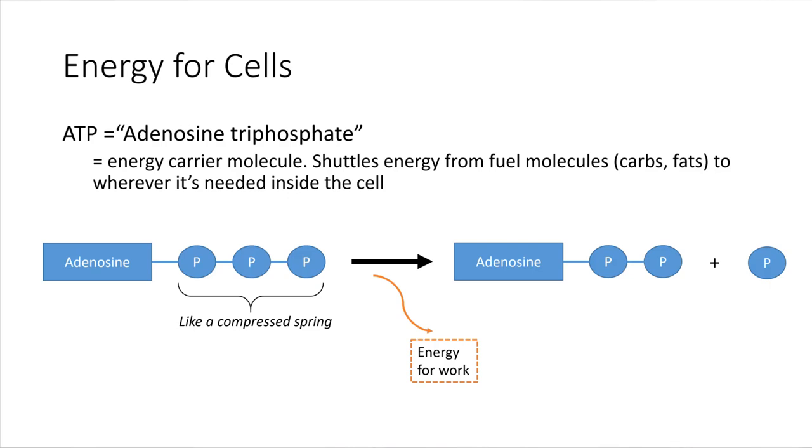So it releases a lot of energy that the cell can use for work. This energy could literally be used to move something. Come back to the proton pump example. The cell might want to move something from one side of the membrane to the other. This would be a molecule that would allow that to happen.